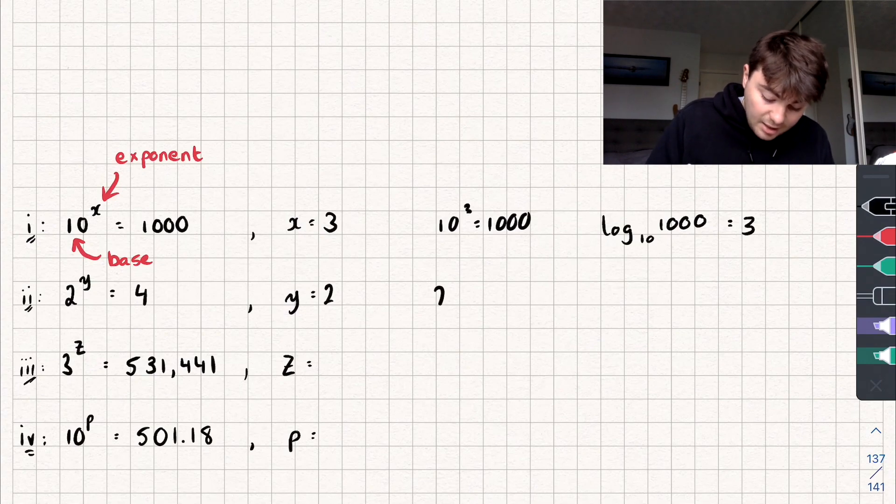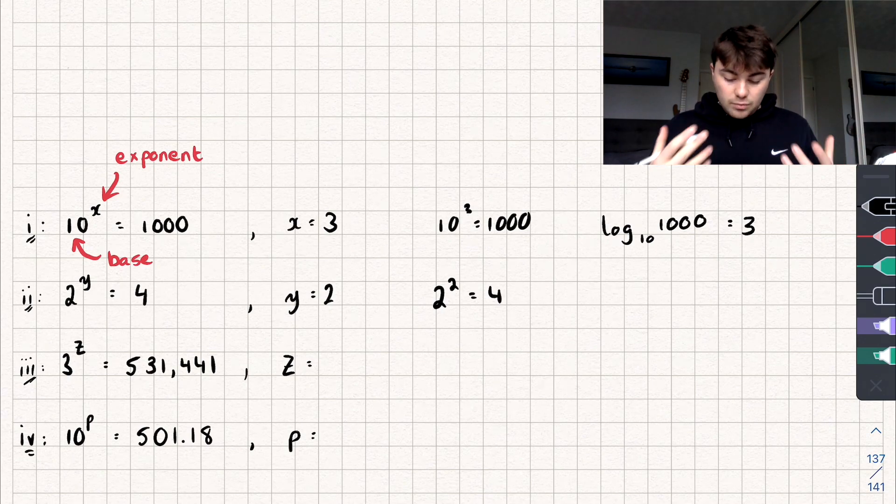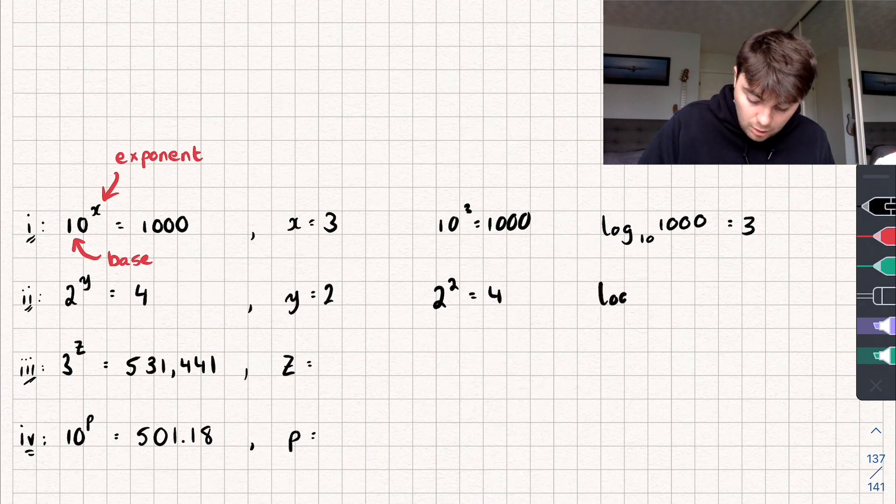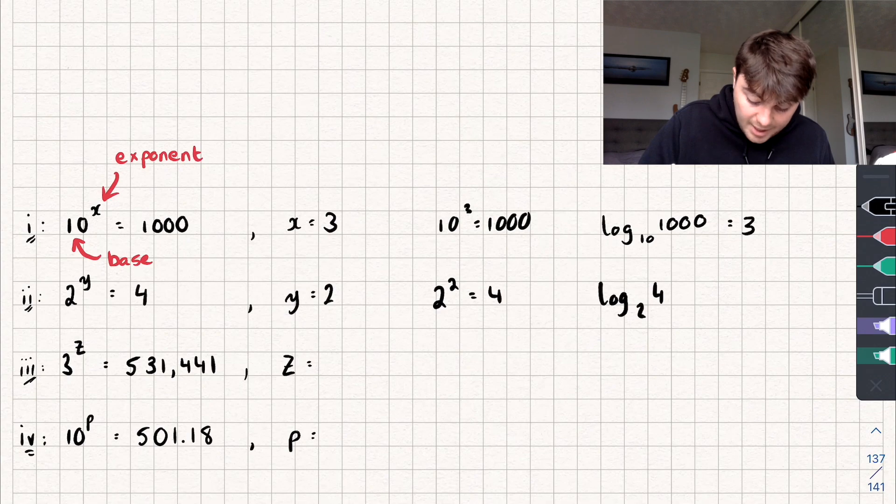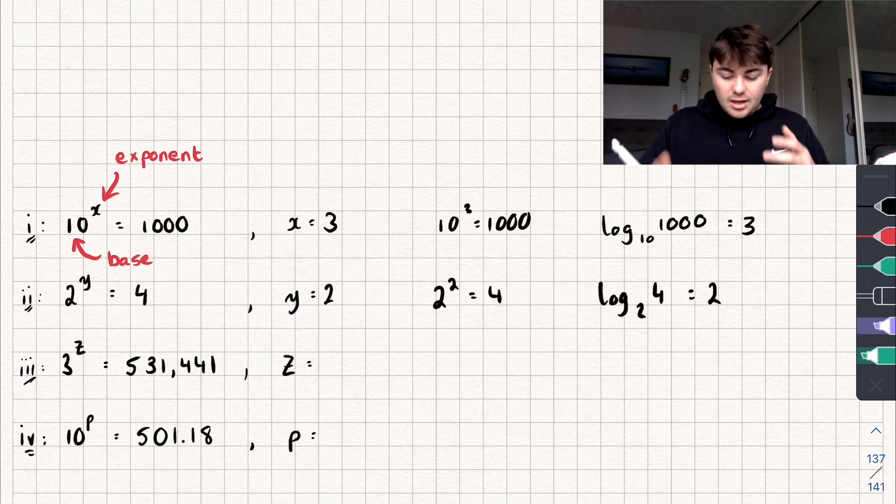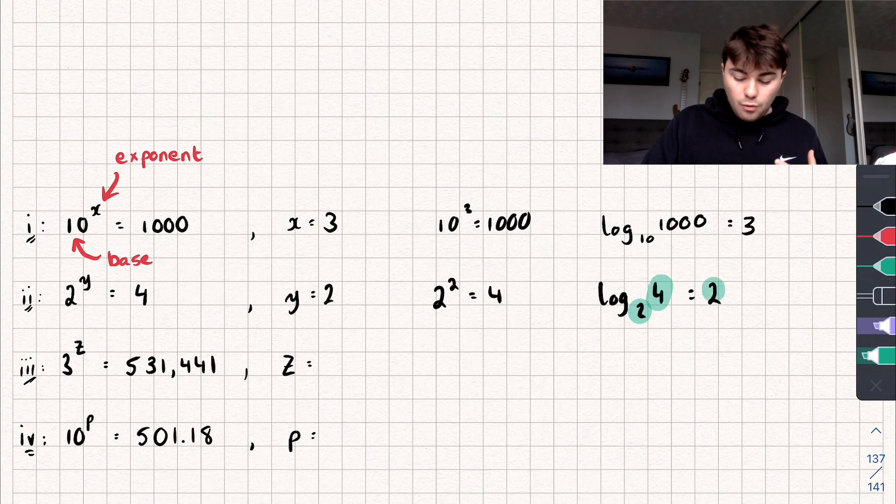Let's take a look at this second example. We've got 2 to the squared is equal to 4. How could I write that in terms of a logarithm? Well, I could say the log of 4 base 2 is equal to 2. Again, it's pretty easy, it's just saying what do I put 2 to the power of to give me 4? Well, 2 to the power of 2 or 2 squared.